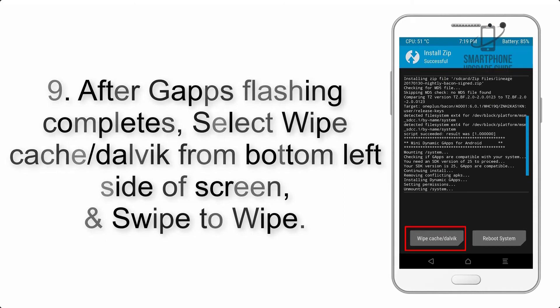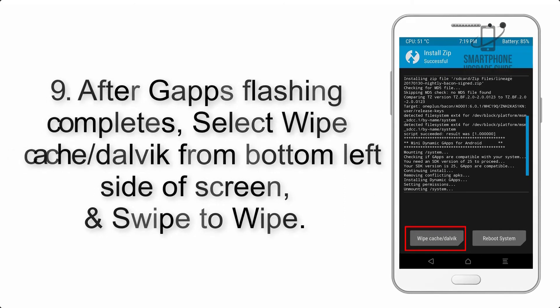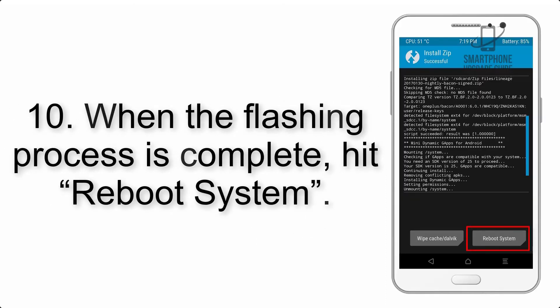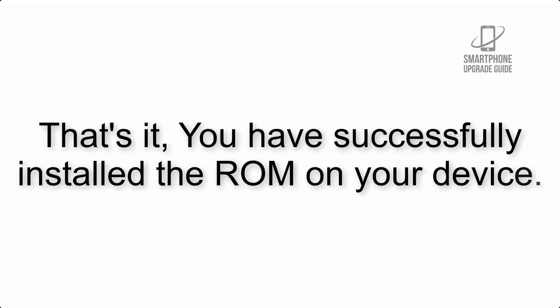Step 9: After GApps flashing completes, select Wipe Cache and Dalvik from the bottom left side of the screen and swipe to wipe. Step 10: When the flashing process is complete, hit Reboot System. That's it — you have successfully installed the ROM on your device.